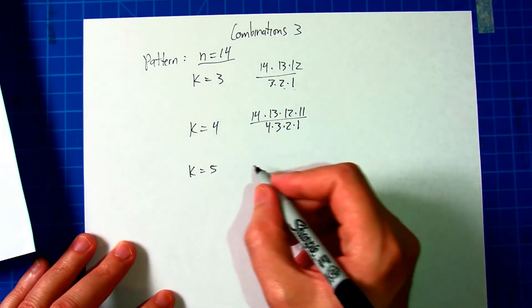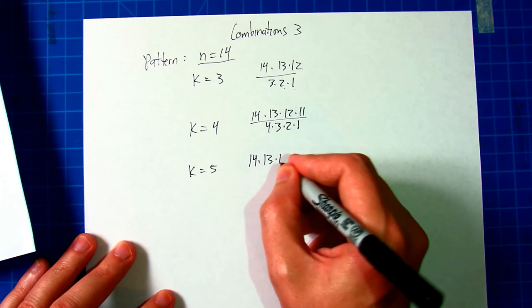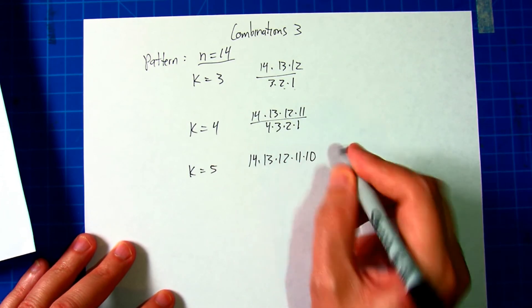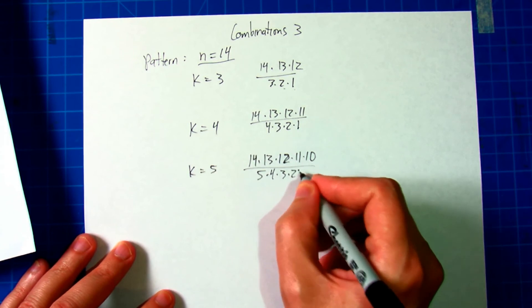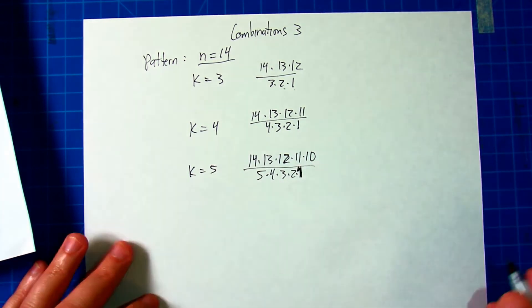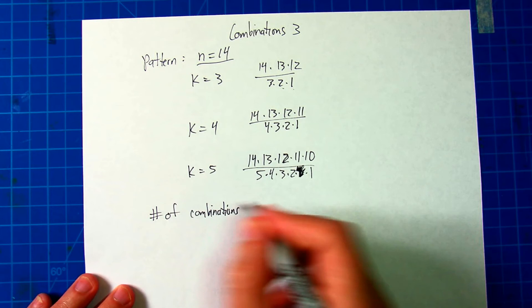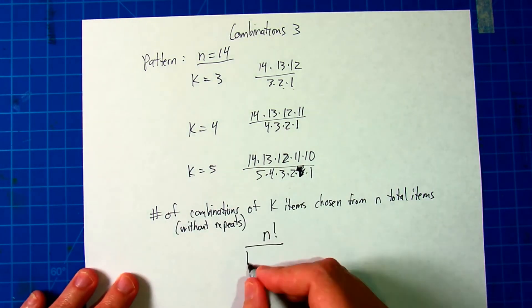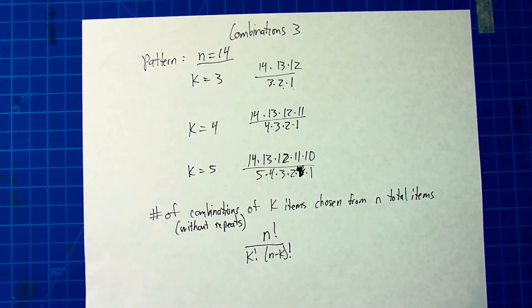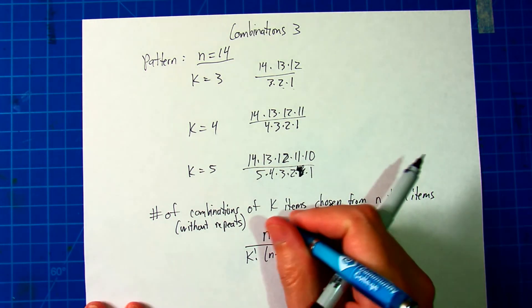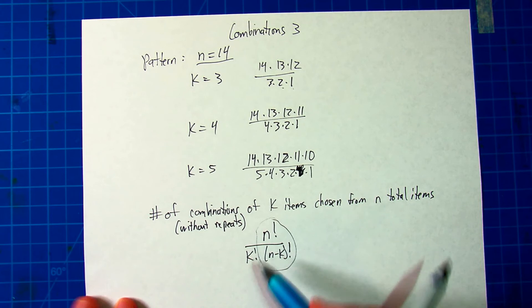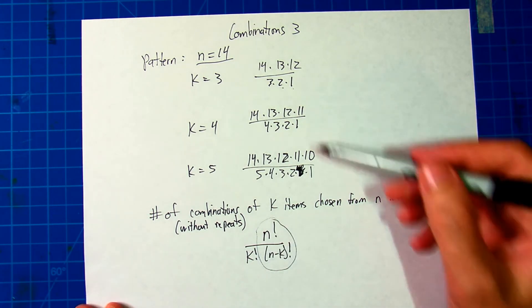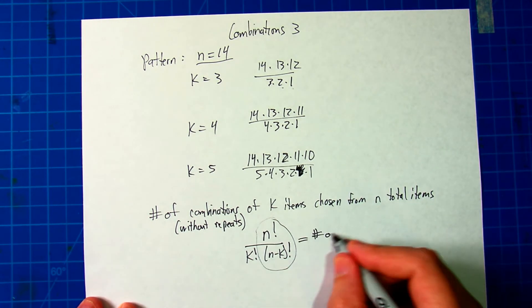So you can predict that K equals 5, you're going to have 14 times 13 times 12 times 11 times 10, just extend that one more, over 5 times 4 times 3 times 2 times 1. So we get a formula that looks like this, where two pieces of this are probably familiar from permutations. This was the number of permutations, and then if we divide that by the number of ways there are to permute the K objects, we get the total number of combinations.